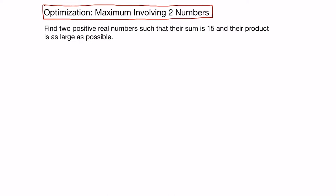There's a lot of information in this sentence. We've got two positive real numbers, so they have to be greater than 0. Sum refers to addition, so the two numbers have to add to give us 15. Product refers to multiplication, so they have to multiply to be a maximum. Large as possible means that we're dealing with a maximum.